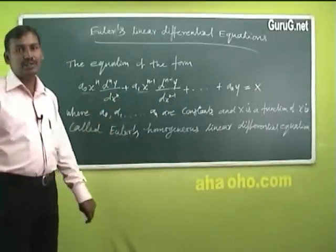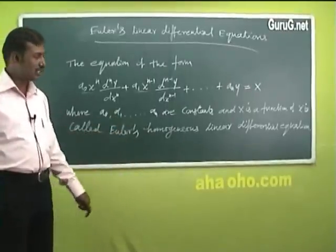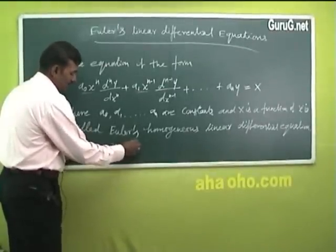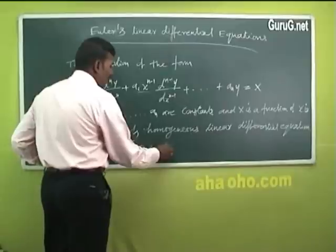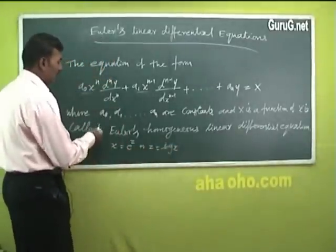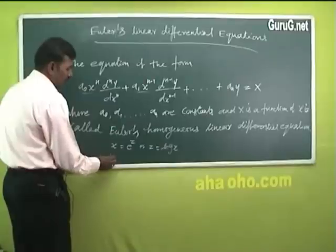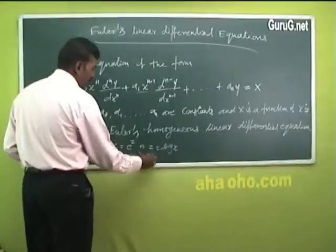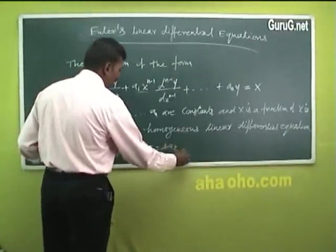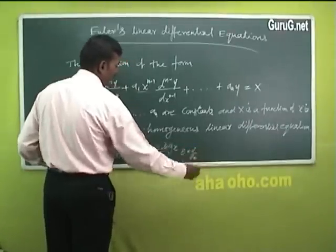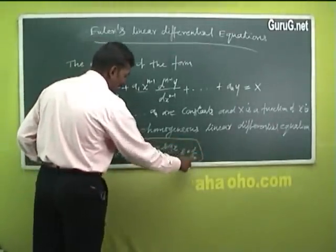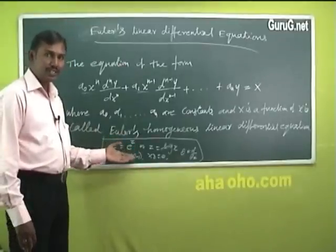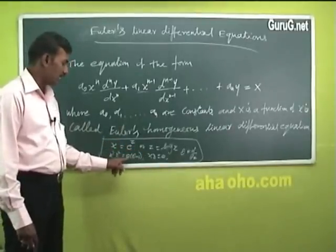Whenever this type of equation is given, you convert it into a linear equation with constant coefficients by using a suitable transformation. You take x = eᶻ or z = log x. Using this transformation, x²D² becomes θ(θ - 1) and xD = θ, where θ = d/dz.